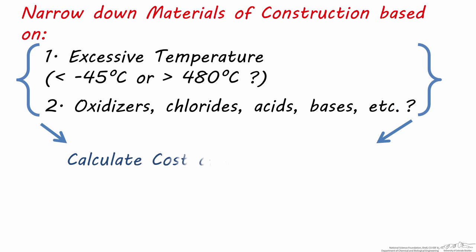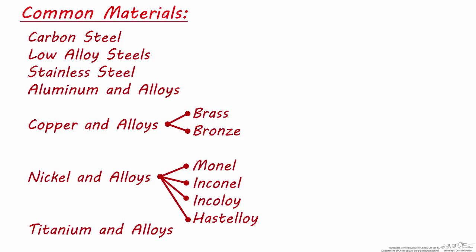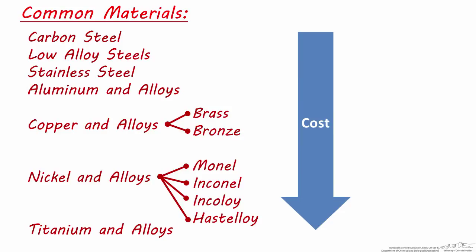Once your choices have been narrowed down based on these factors, calculate the cost of each feasible option to make a final decision. Remember that we discussed 11 common types of materials used in chemical process equipment, which are listed here. The cost of these materials generally increases as we go down the list, but keep in mind this is only a general rule and the prices of these metallic raw materials can fluctuate considerably.